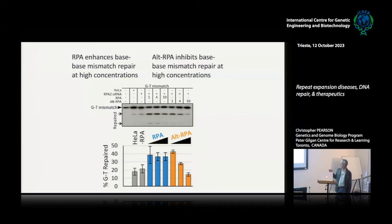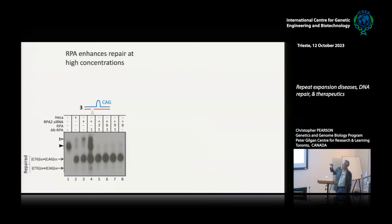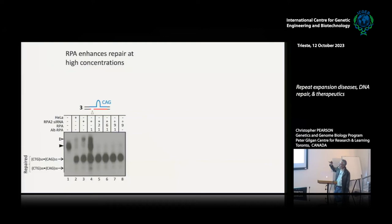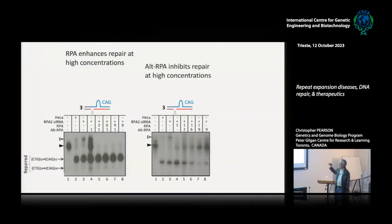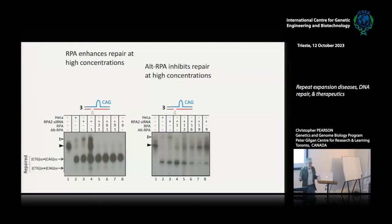For slipped DNA repair, we start with a slip-out that migrates on a gel, and when we add HeLa cell extracts it gets repaired as a fully paired structure. Adding increasing amounts of canonical RPA enhances repair; adding increasing amounts of alternative RPA goes from repair to inhibited repair — an antagonistic effect. Even though both complexes share RPA1 and RPA3 subunits, changing RPA2 to RPA4 dramatically changes the activity of this protein.